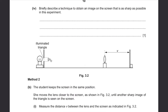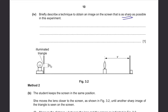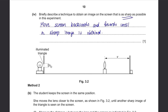Briefly describe a technique to obtain an image on the screen that is as sharp as possible. The question actually gives you the answer: move the screen backwards and forwards until you obtain a sharp image.